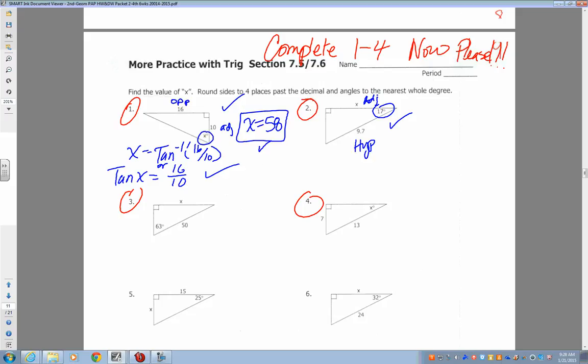The trig function dealing with adjacent hypotenuse has cosine. So the trig equation is cosine of 17 equals x over 9.7. Check if they have that equation. You could have put it over 1. It's the same thing.